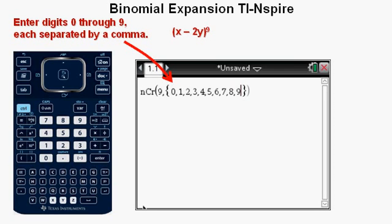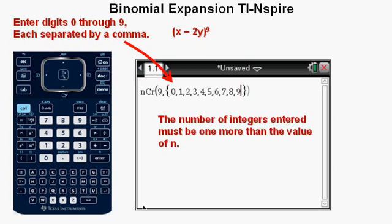Something to look out for when getting all the coefficients. The number of integers starting with 0, each separated by a comma, must be one more or one greater than the value of N. In this case, N is 9 and the number of integers entered is 10. The digits 0 through 9 are these 10 input values.